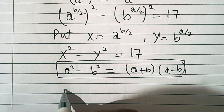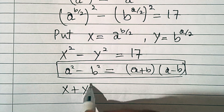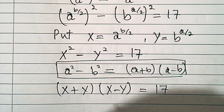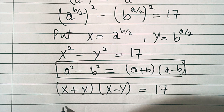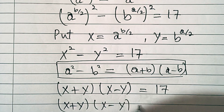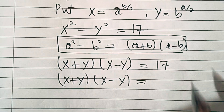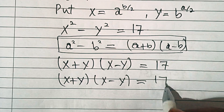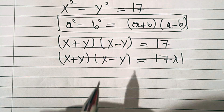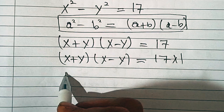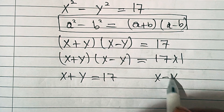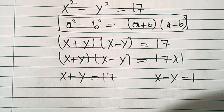So this will become (x + y) times (x - y) equals 17. The factorization of 17 is 17 times 1. That means we can write x plus y equals 17 and x minus y equals 1.